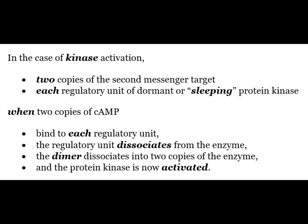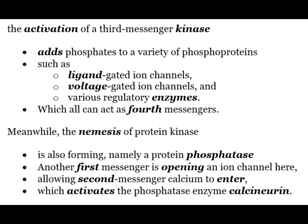In the case of kinase activation, two copies of the second messenger target each regulatory unit of the dormant protein kinase. When two copies of cyclic AMP bind to each regulatory unit, the regulatory unit disassociates from the enzyme. The dimer disassociates into two copies of the enzyme and the protein kinase is now activated. The activated third messenger kinase adds phosphate groups to a variety of phosphoproteins such as ligand gated ion channels, voltage gated ion channels and various regulatory enzymes, all of which can act as fourth messengers.